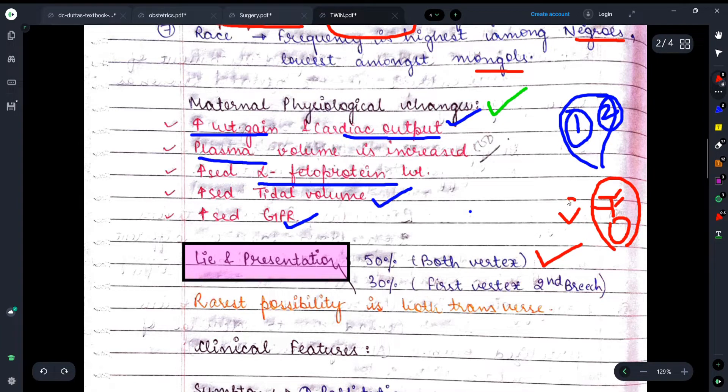So 50% chances that both babies are in vertex, 30% that the first is in vertex and the second is in breech. In breech, the head lies upside. The rarest possibility is that both are in transverse condition.